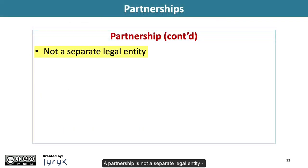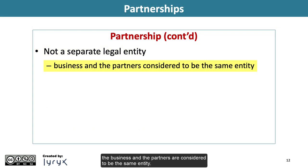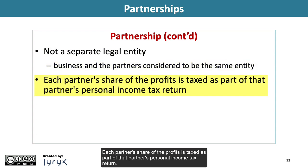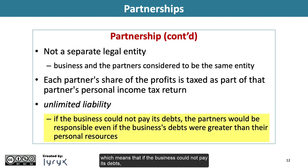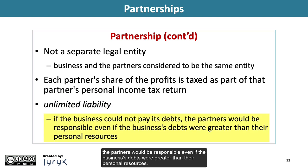A partnership is not a separate legal entity — the business and the partners are considered to be the same entity. Each partner's share of the profits is taxed as part of that partner's personal income tax return. The partners are subject to unlimited liability, which means that if the business could not pay its debts, the partners would be responsible even if the business's debts were greater than their personal resources.